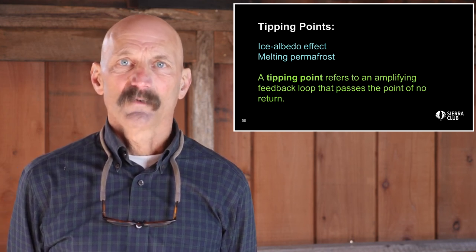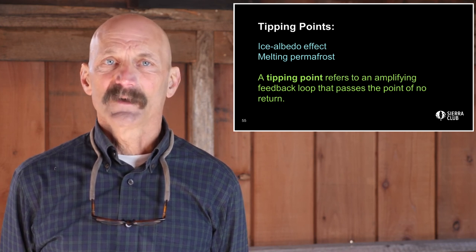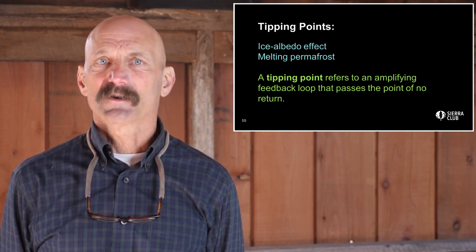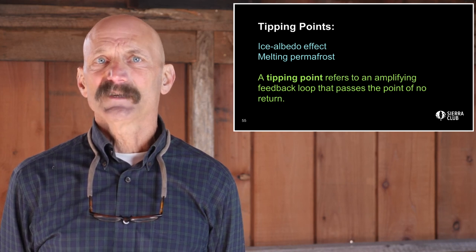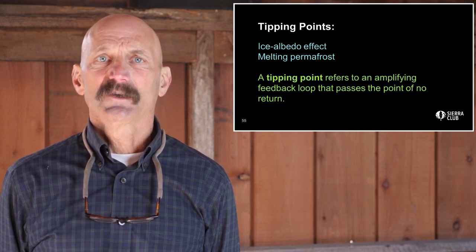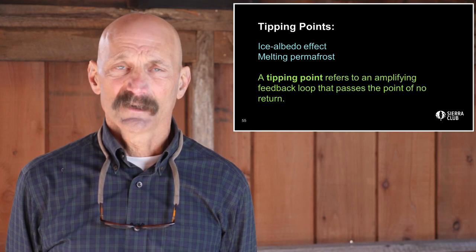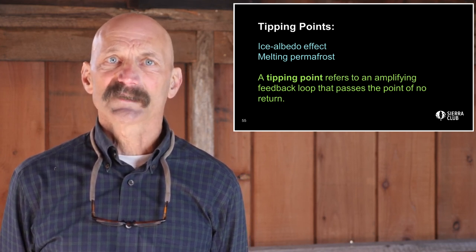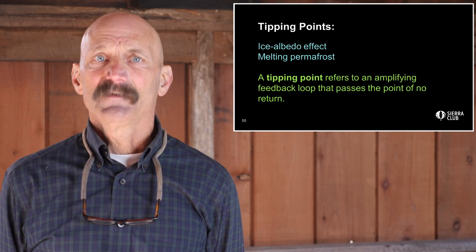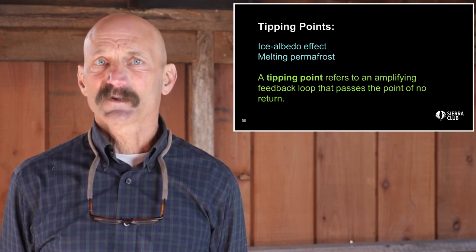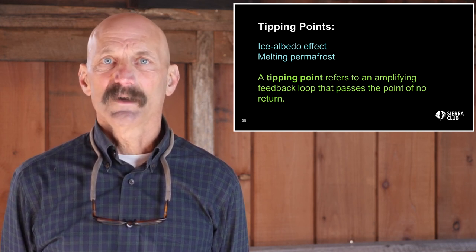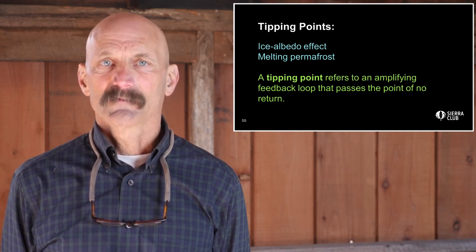A tipping point refers to an amplifying feedback loop that passes the point of no return. According to a 2019 paper in the journal Nature, the IPCC introduced the idea of climate tipping points two decades ago. At that time, these large-scale discontinuities in the climate system were considered likely only if global warming exceeded 5 degrees centigrade above pre-industrial levels. Information summarized in the two most recent IPCC special reports suggest that tipping points could be exceeded even between 1 and 2 degrees centigrade of warming.